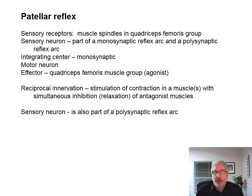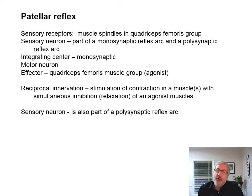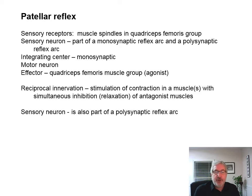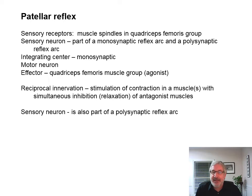We're going to look at the patellar reflex. The sensory receptors are muscle spindles in the quadriceps femoris — the quads. The sensory neuron is part of both a monosynaptic reflex arc and a polysynaptic reflex arc. The integrating center is monosynaptic. There's a motor neuron, and the effector is the quadriceps femoris group. There is also something called reciprocal innervation, which is stimulation of contraction in muscles, while simultaneously inhibiting or relaxing antagonistic muscles.